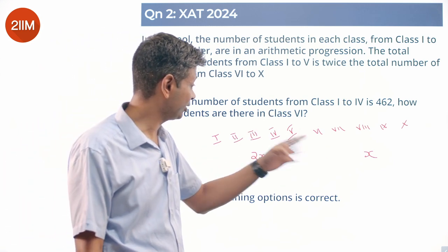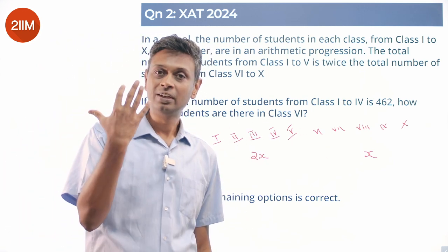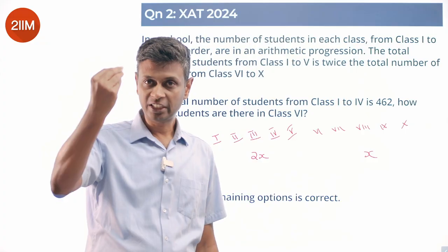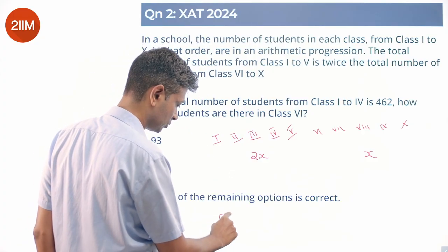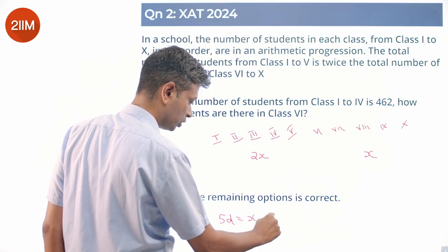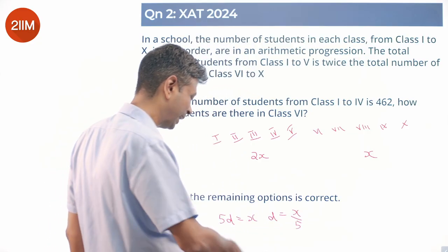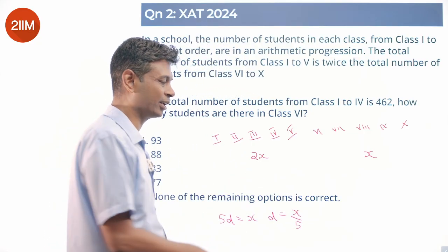2x and x are at certain positions in the AP. From here to here will be 5 times common difference, or 5d equals x, so d is x by 5. Since I'm stepping down, d is minus x by 5.